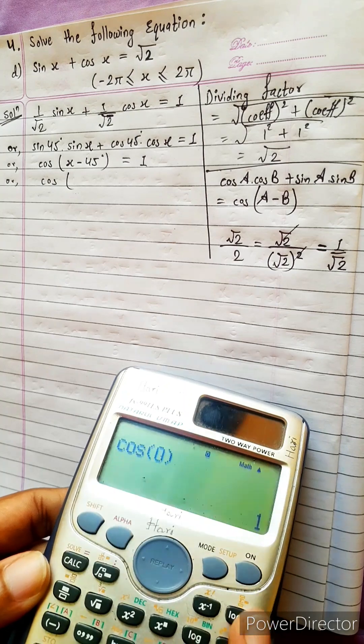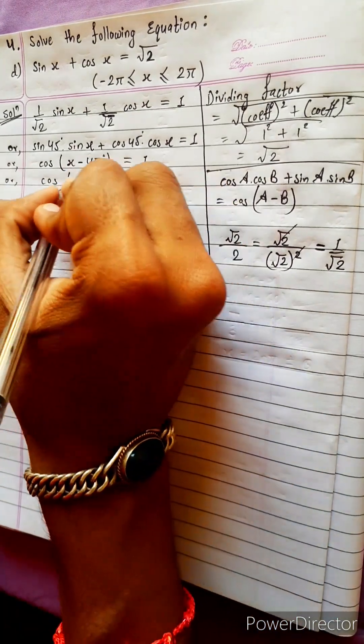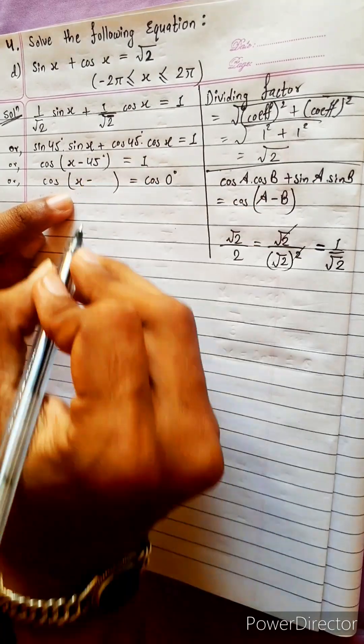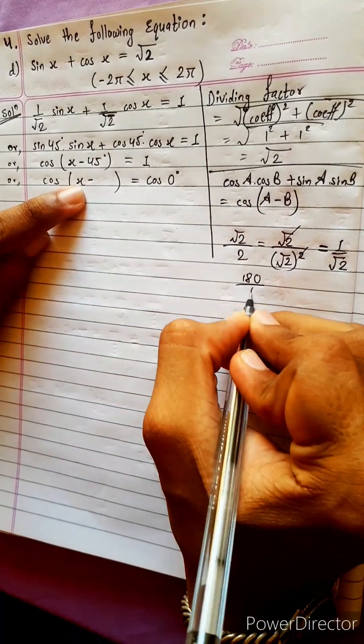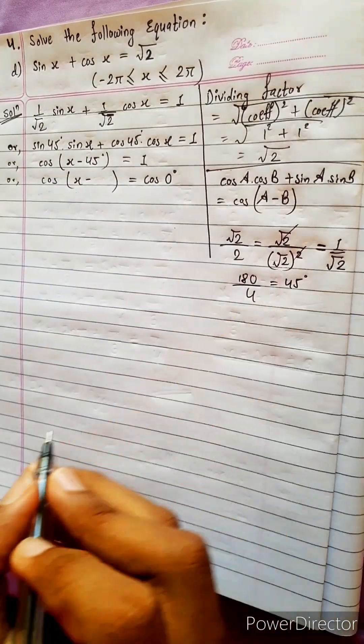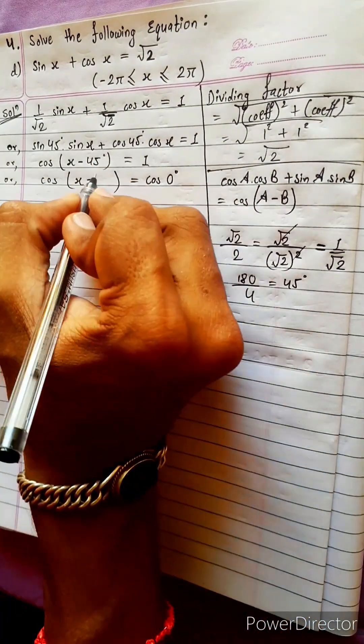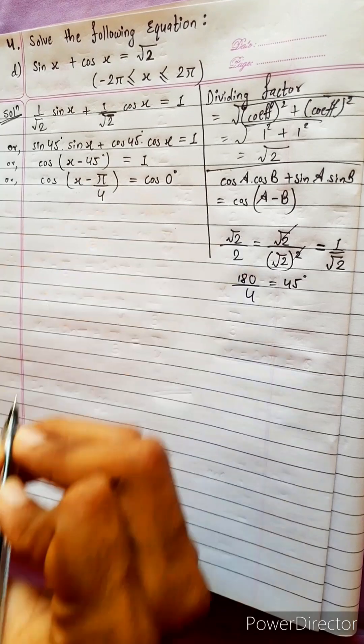Look here, cos 0. Yes, cos 0 is 1. It means x minus 45 equals to cos 0 degree. 45 means 180 by 4 is 45. 180 by 4, yes 45, 180 by 4, pi by 4.